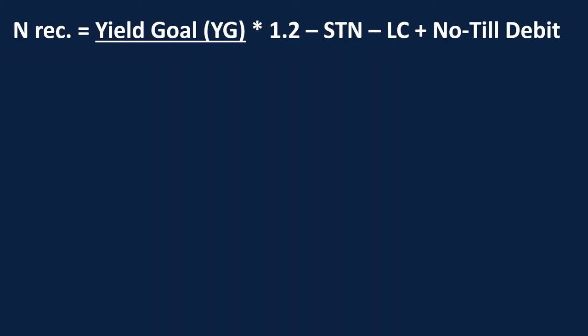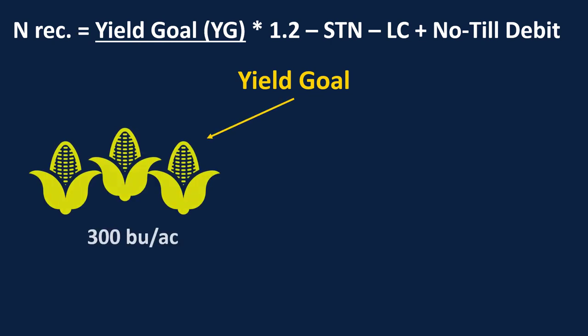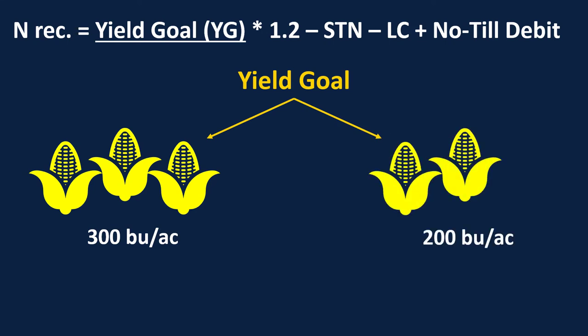The first part in this recommendation is the yield goal, and it's very important to calculate because it's based on this value that we get our nitrogen recommendation. The question to ask about a yield goal is: is it a goal where we're thinking 'I want 300 bushels per acre,' or is it saying 'I can actually produce 200 bushels per acre corn in this field'? We want a realistic goal of what we are most likely to reach or what our potential is for this coming growing season.